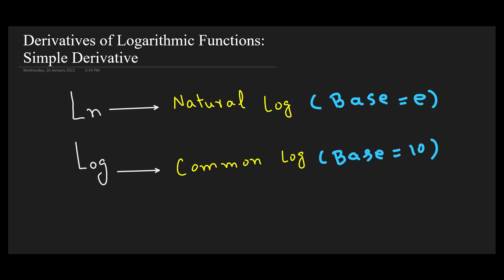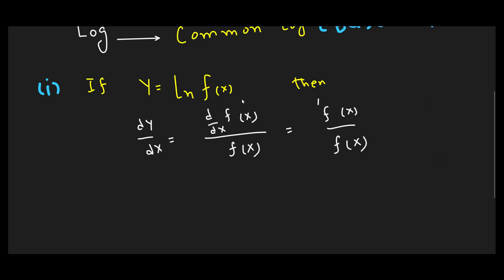The formula for the derivative of a logarithmic function is as follows. If y is equal to natural log of f(x), then to take the derivative of the natural log function, rewrite f(x) in the denominator and take the simple derivative of f(x) in the numerator. It will result in f prime of x in the numerator and f(x) in the denominator.